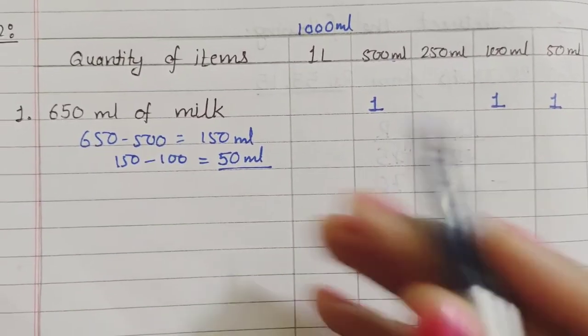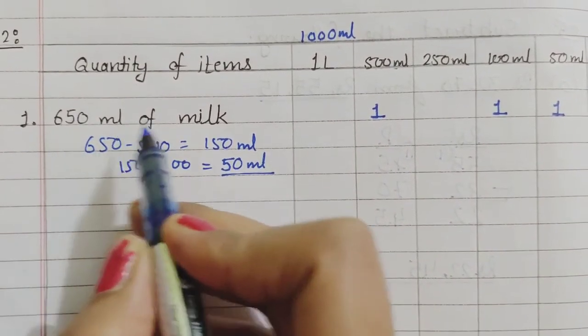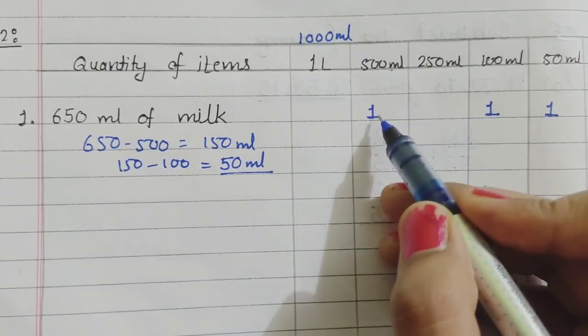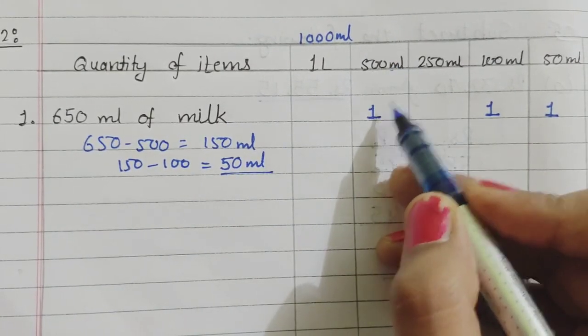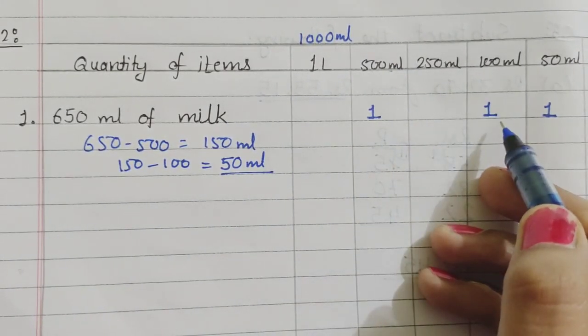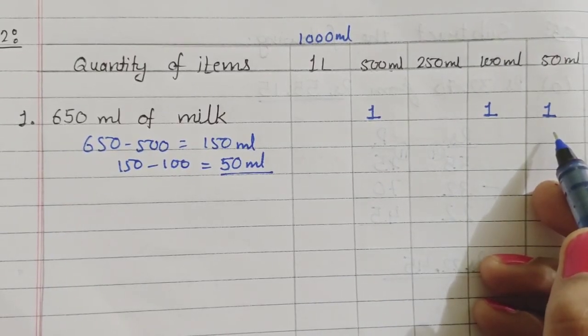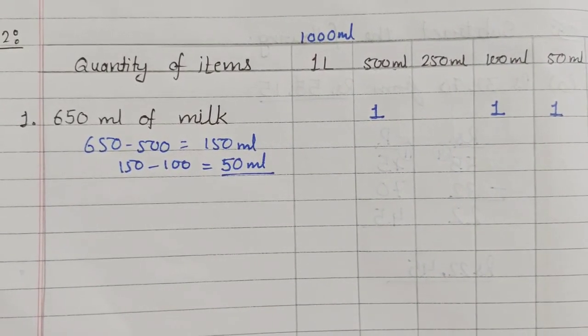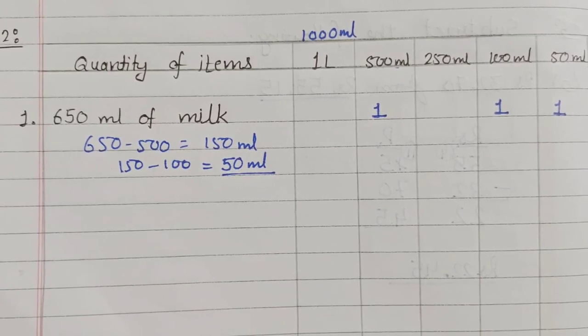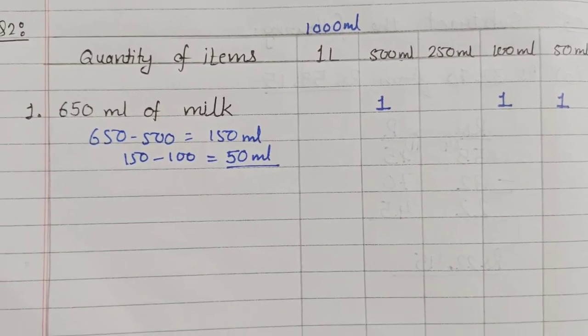We will be left with 50 ml and here we have a container of 50 ml, so we will use it only once. To measure 650 ml of milk, we use 500 ml one time, 100 ml one time, and 50 ml one time. In a similar way, you have to solve all the parts of this question.